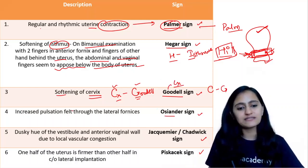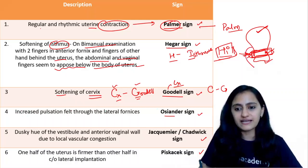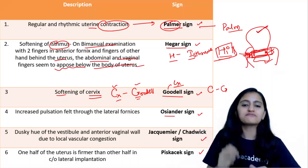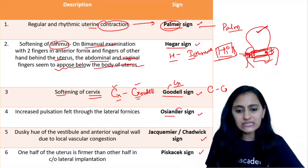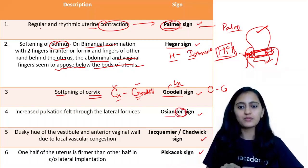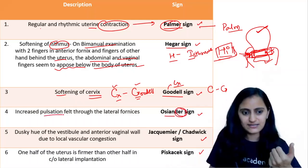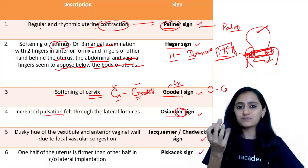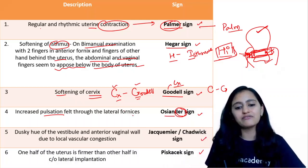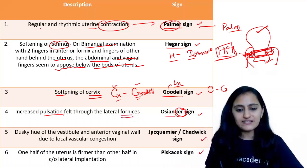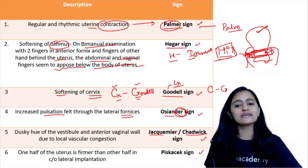Next is Ockander sign — increased pulsations felt through the lateral fornices. When you palpate through the lateral fornices, increased pulsations are felt. To remember: 'Ockander' — think 'dhar dhar' — dhar dhar is pulsations, like a heartbeat. Pulsations are felt through the lateral fornices — that is your Ockander sign.